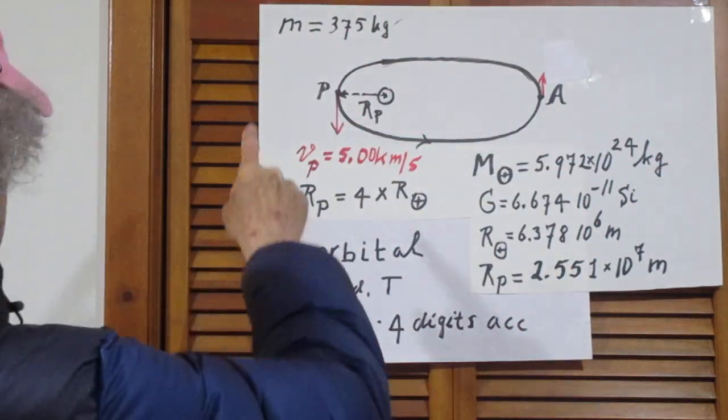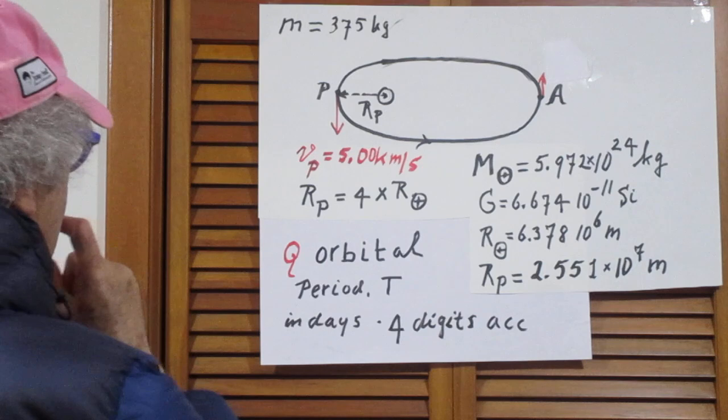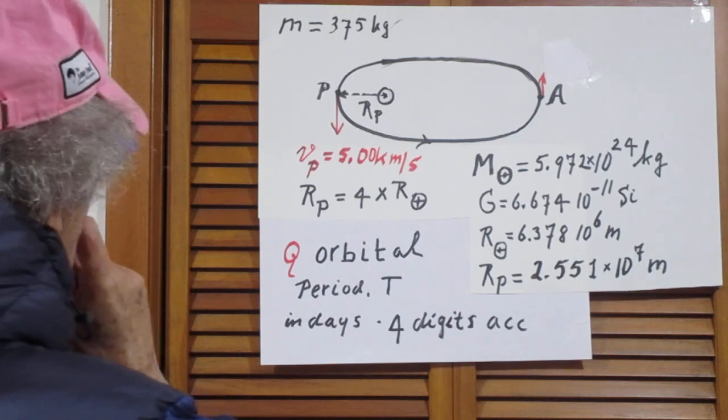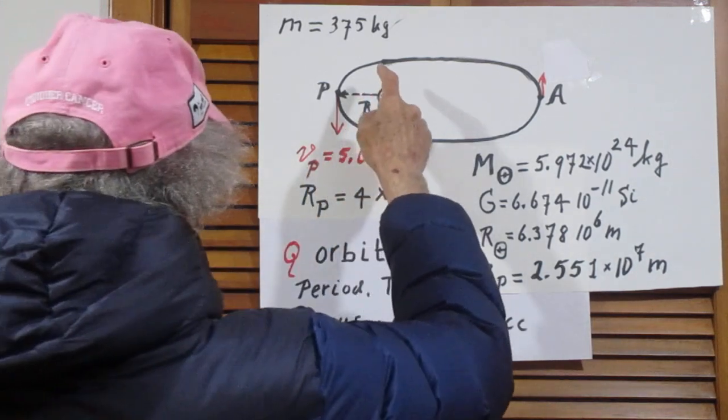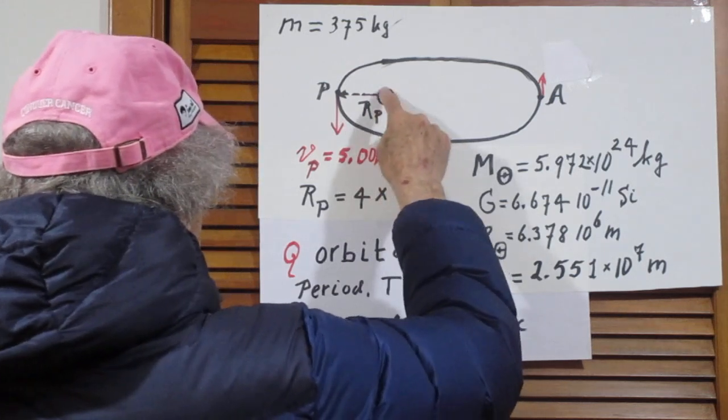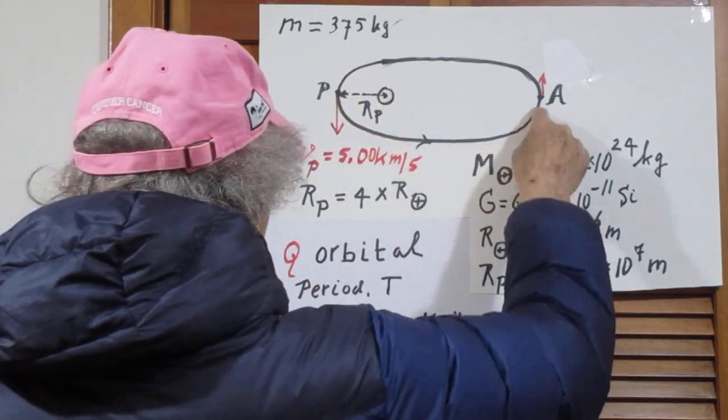There is a satellite which has a mass of 375 kilogram which is in an elliptical orbit around the Earth. This is the Earth, this is the elliptical orbit.